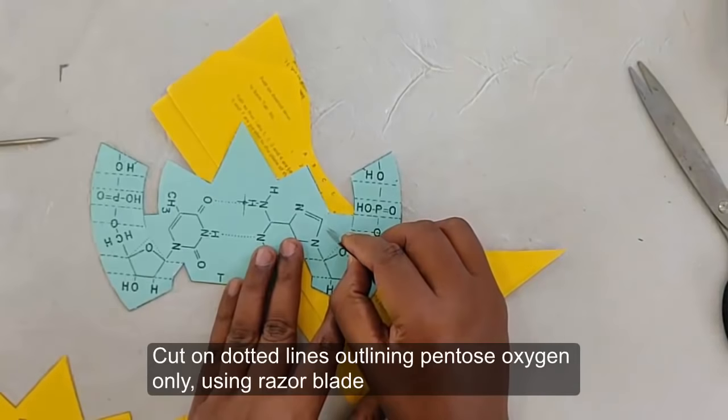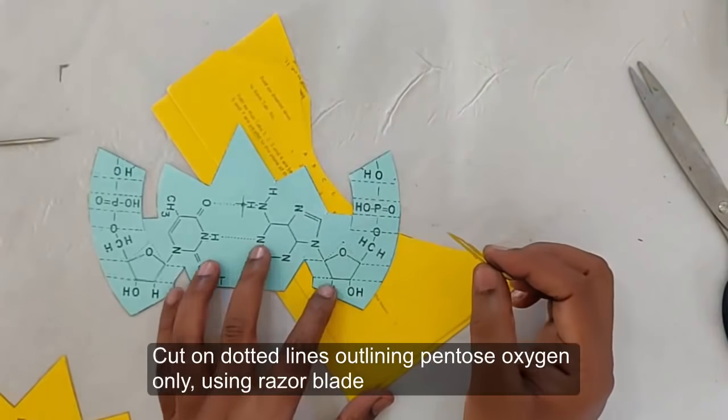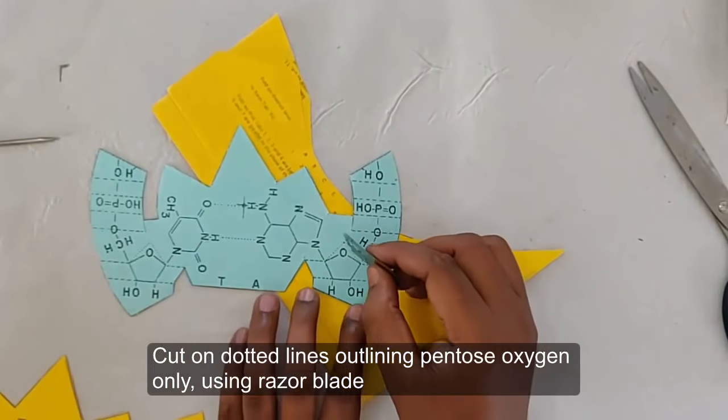Cut on the dotted lines outlining pentose oxygen point using the razor blade.